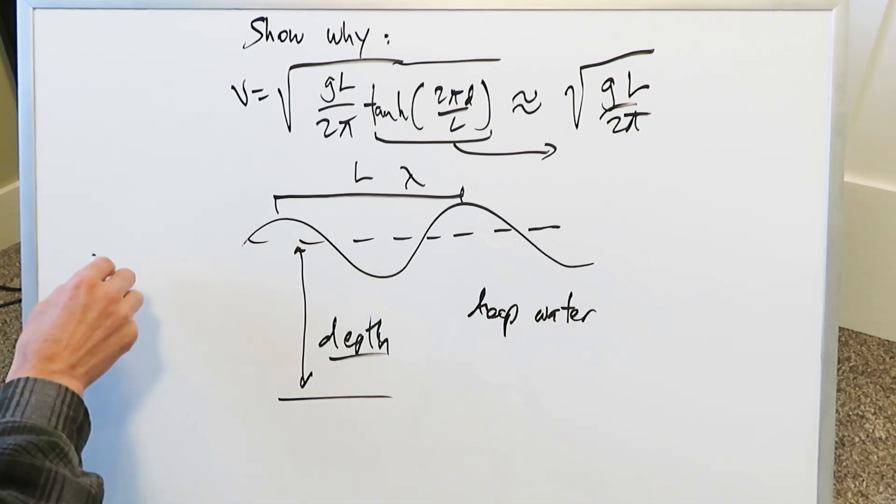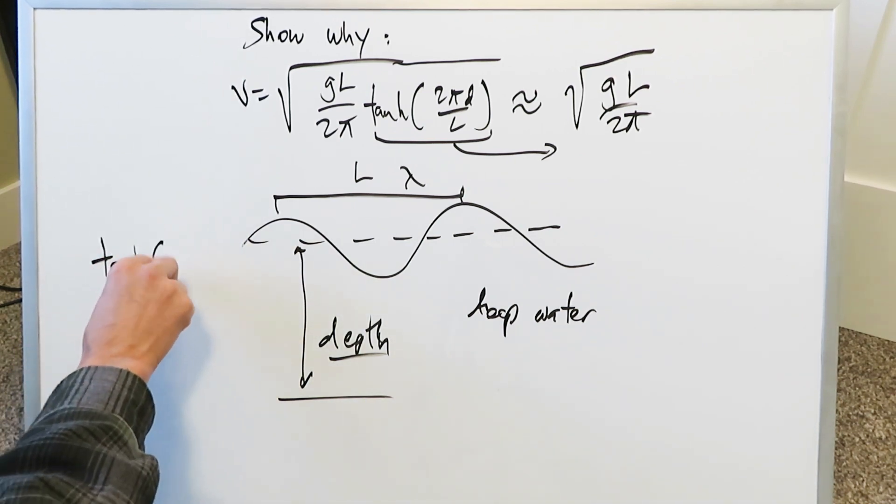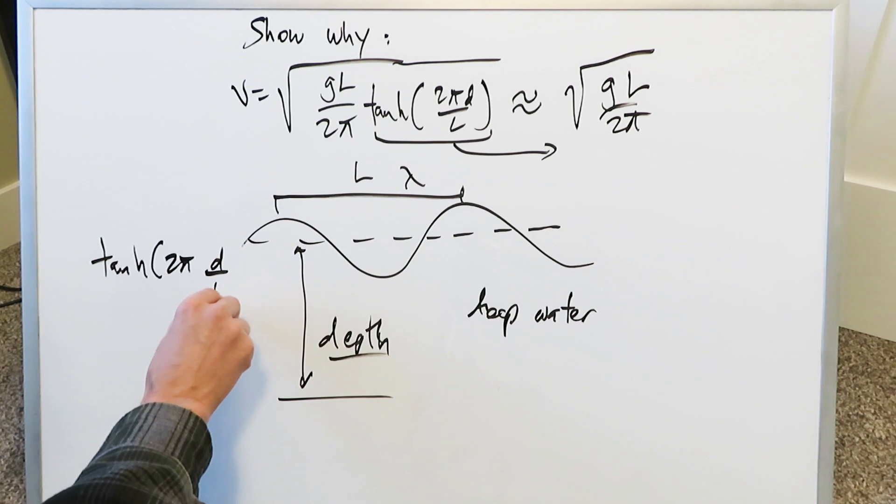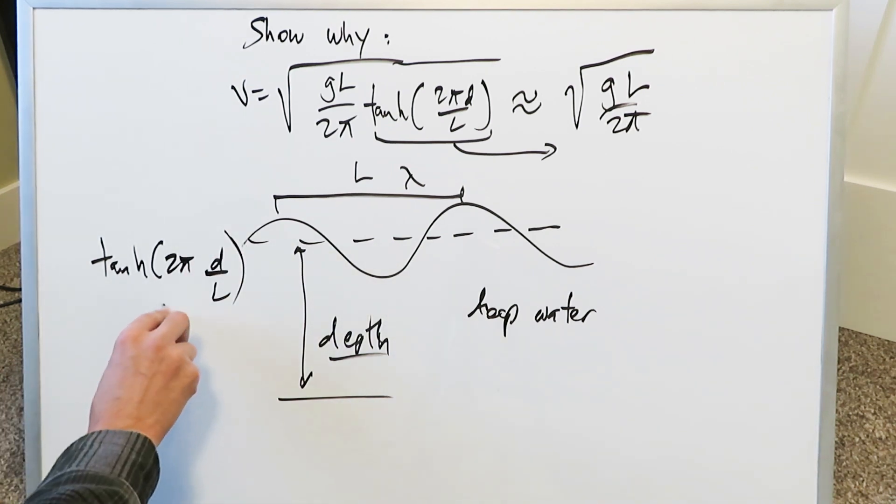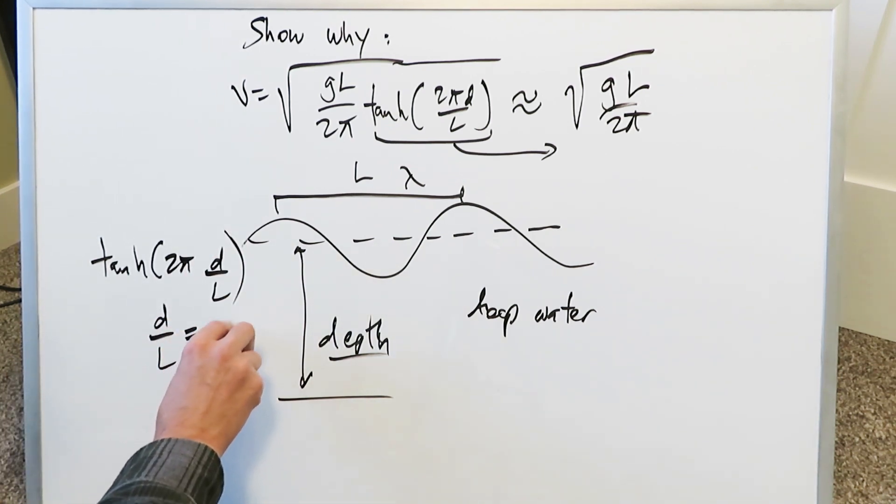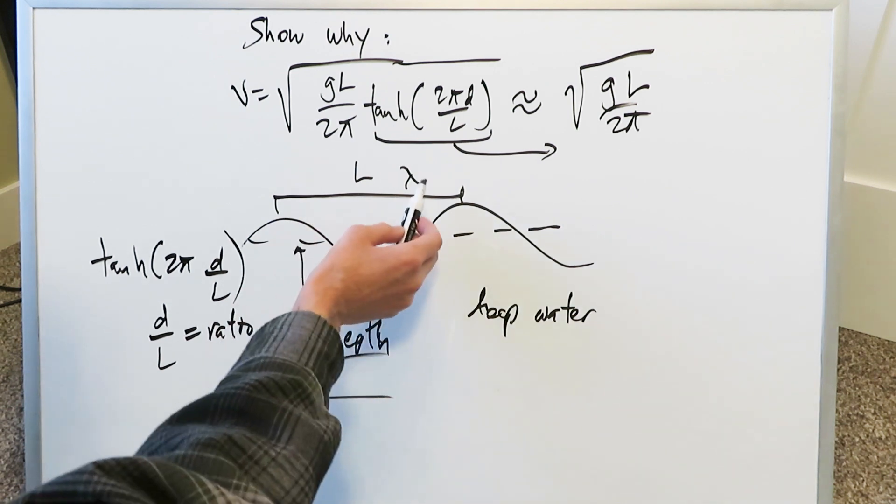We have this hyperbolic tan, and then we have a 2πd over L. If you look right at this d over L, it represents a certain ratio. It's the ratio of the depth divided by the wavelength.